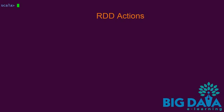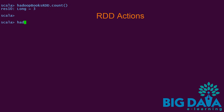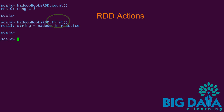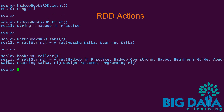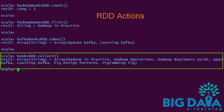Let's try the four discussed actions in Spark Shell. I am applying count action on Hadoop books RDD, and it gives the number of elements in that RDD, which is three. Next, I am applying first action on Hadoop books RDD, and it gives 'Hadoop in Practice', which is the first book in Hadoop books RDD. I am applying take 2 on Kafka books RDD, and that gives any two elements from Kafka books RDD. When I apply collect action on books RDD, it gives me the complete list of elements of that RDD.